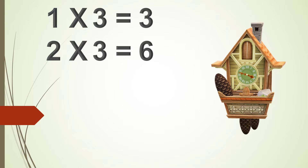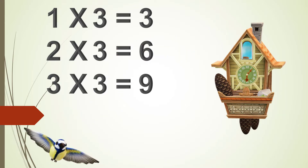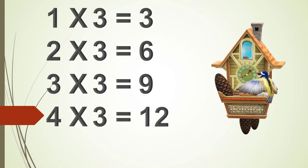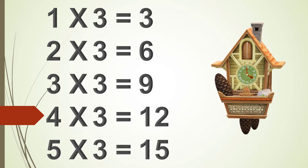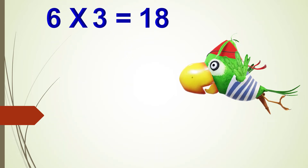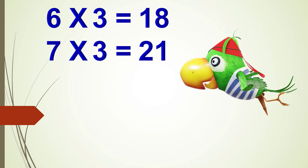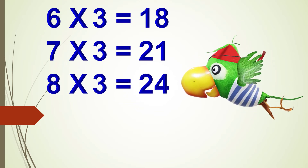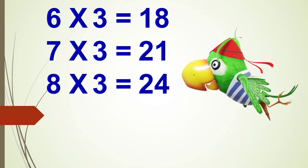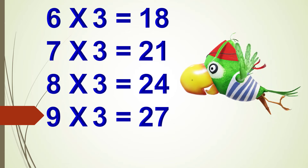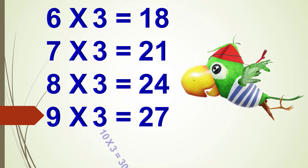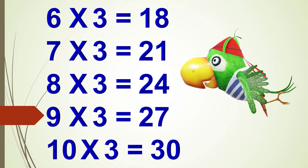1 x 3 is 3, 2 x 3 are 6, 3 x 3 are 9, 4 x 3 are 12, 5 x 3 are 15, 6 x 3 are 18, 7 x 3 are 21, 8 x 3 are 24, 9 x 3 are 27, 10 x 3 are 30.